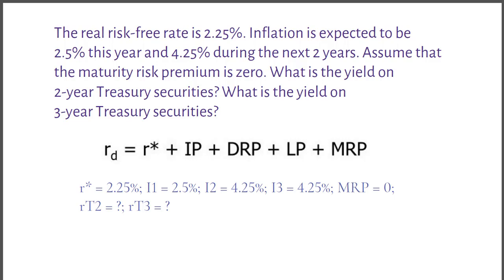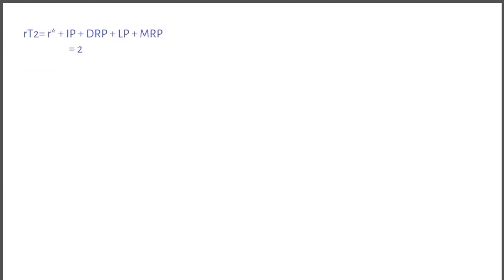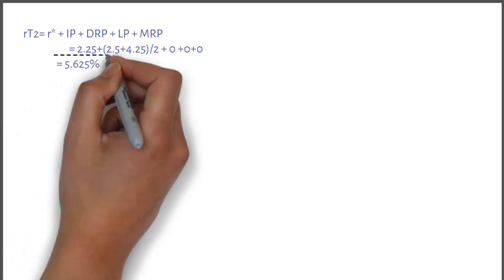We need to calculate returns for two-year treasury securities and three-year treasury securities. Let us plug in the values in the equation. After solving the equation, you get 5.63%.